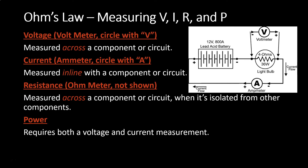Ohm's law and measuring voltage, current, resistance, and power: voltage, indicated with the V with the circle around it, is measured across the component that you're measuring. Current, or the A with the circle around it, is measured in line with the component or circuit. Resistance is also measured across a component, but you have to isolate that component from other components so they don't affect the resistance value. To calculate power, you need both the voltage and a current measurement.